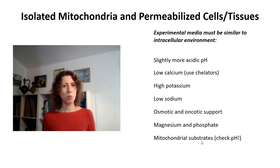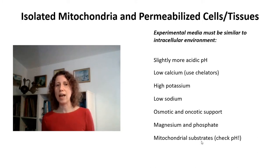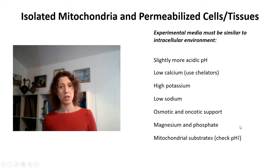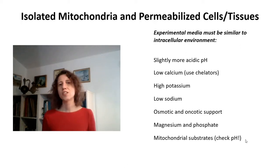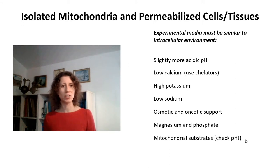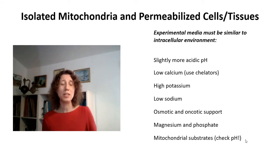An important point is that mitochondrial substrates are typically quite acidic, so make sure to check and buffer their pH — preferably with potassium — before adding them to mitochondria. A common problem is that people add pyruvate without buffering pH, effectively dropping the experimental media pH to around 3, after which mitochondria no longer function.